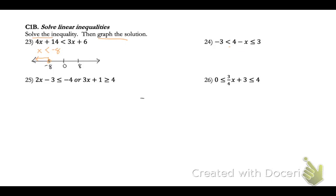With number 24, notice that this is a compound inequality, so we're going to solve both of these at once. We look in the middle — we need to isolate the x — so we'll start by subtracting 4 from all sides: from the middle, the left side, and the right side. So we get negative 7 is less than negative x, which is less than or equal to negative 1.